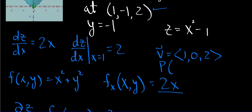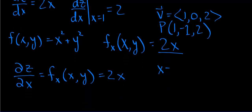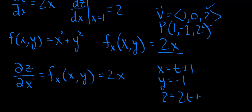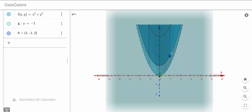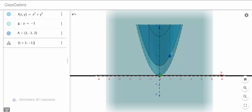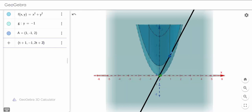So we have a vector and we have a point. The point is (1, -1, 2). Now let's get an equation for the line. It's going to go like this — remember: x equals t plus 1, y equals 0t minus 1, so it's just minus 1, and z equals 2t plus 2. That's how we get the equation for a line. So we can put these in parametric form: (t + 1, -1, 2t + 2). And there we have it.